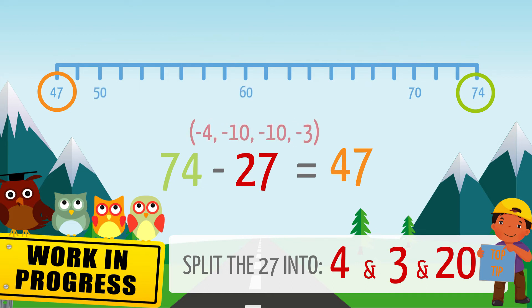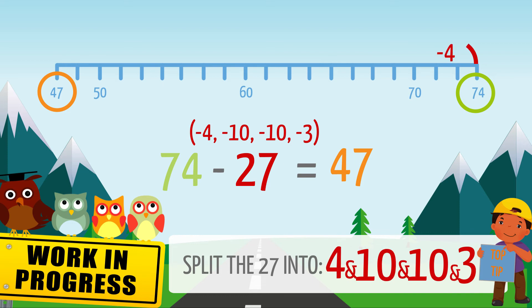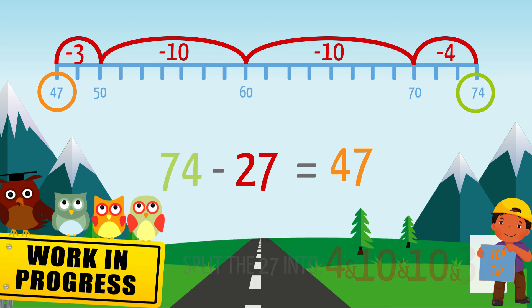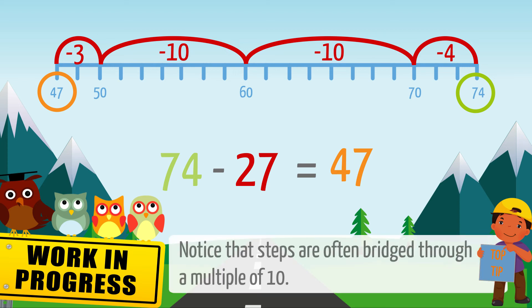Or combined in simpler form. 74 minus 4 is 70. 70 minus 10 is 60. 60 minus 10 is 50. Finally, 50 minus 3 is 47. Notice that steps are often bridged through a multiple of 10.